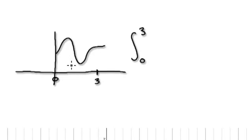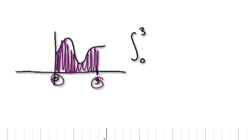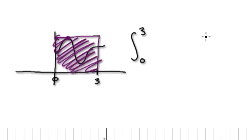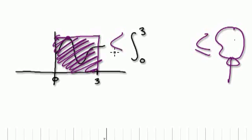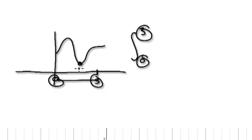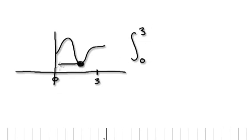The method is always the same. If you want to work out this area here between zero and three, you would trap it between the highest possible value — work out this area here — and that would be your biggest possible area. Then work out your smallest possible value. In between this interval, the smallest value would be right here, so you would then work out this area here.